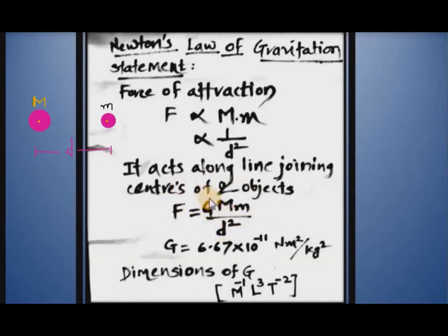Capital G is the gravitational constant whose value is 6.67 into 10 raised to minus 11 Newton meter square per kg square. The SI unit of G is Newton meter square per kg square.